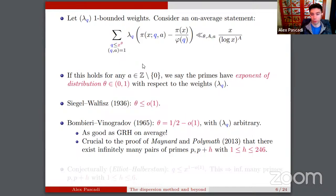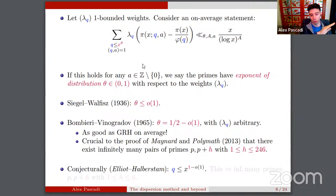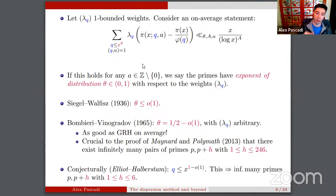This was crucial to the proof by Maynard and Polymath that there are infinitely many pairs of primes p and p+h with h at most 246, establishing small gaps between primes, as well as other important results. Conjecturally, we expect to be able to take θ equals 1 minus ε. If we could handle q as large as x, that would imply there are infinitely many primes with gaps at most 6 — not quite the twin primes conjecture, but pretty close.